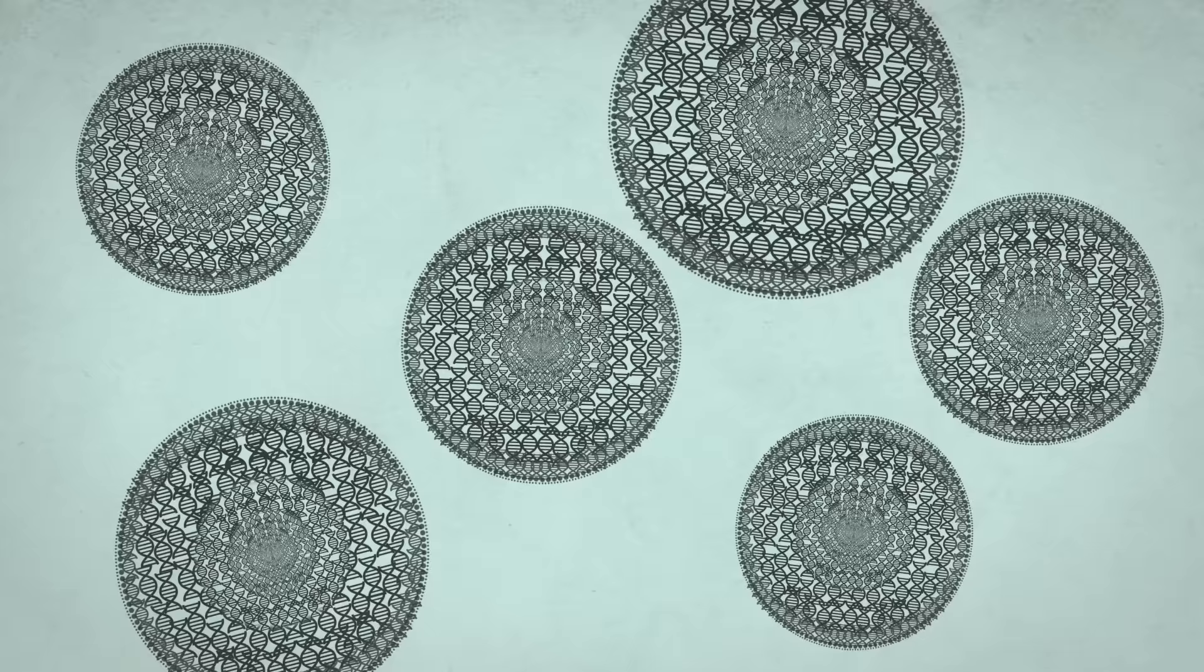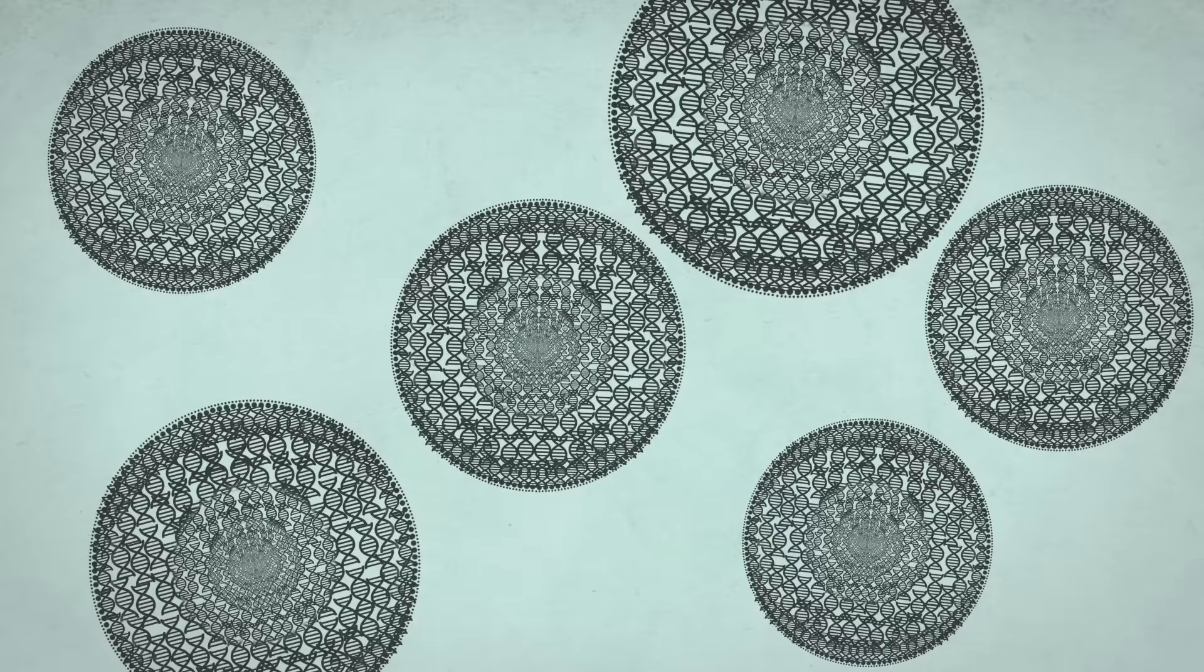Because the genome pieces are so very small, we need some way to increase the signal we can detect from each of the individual letters. In the most common method, scientists use enzymes to make thousands of copies of each genome piece.